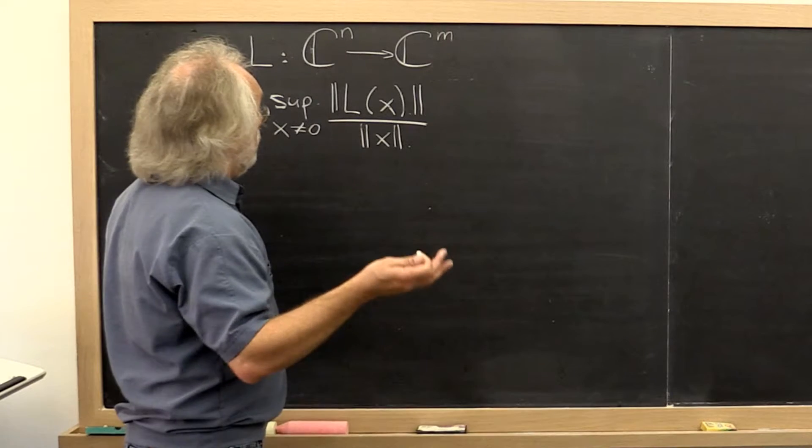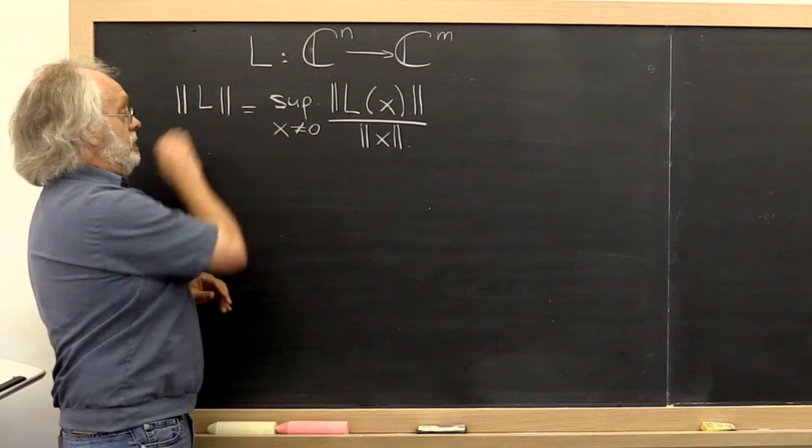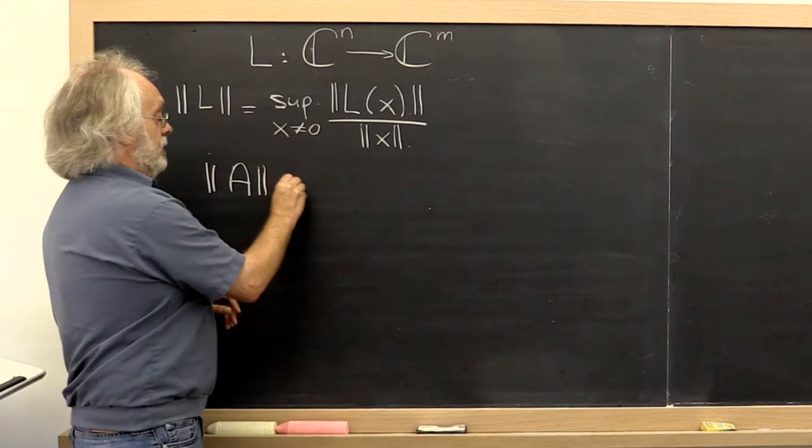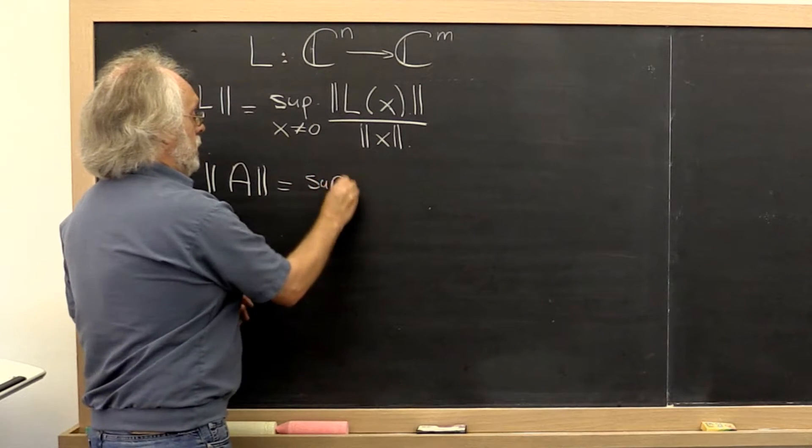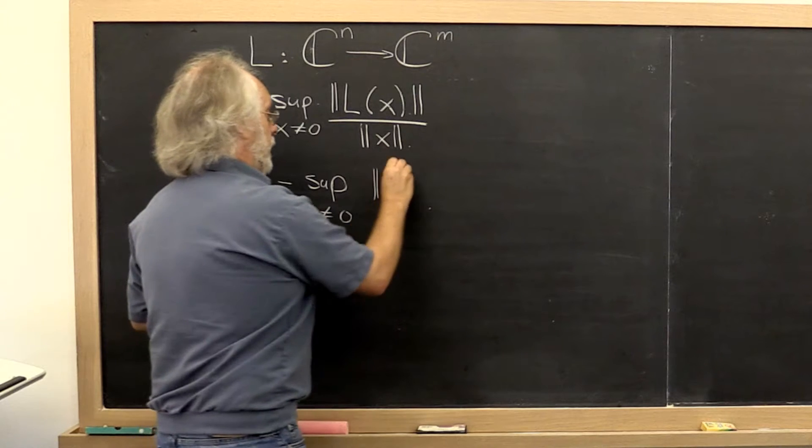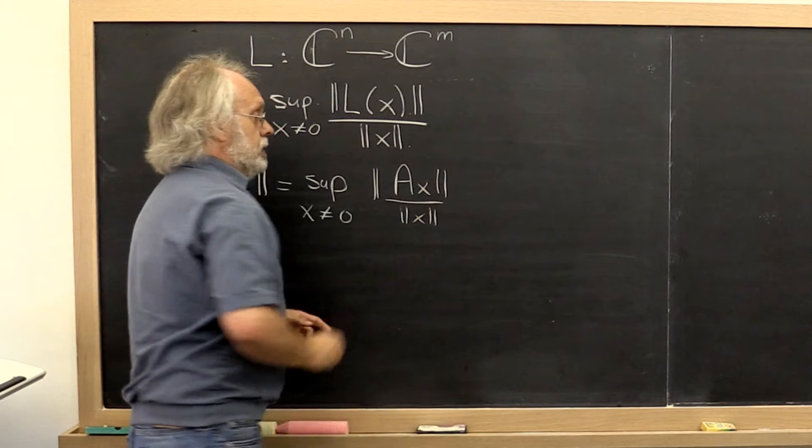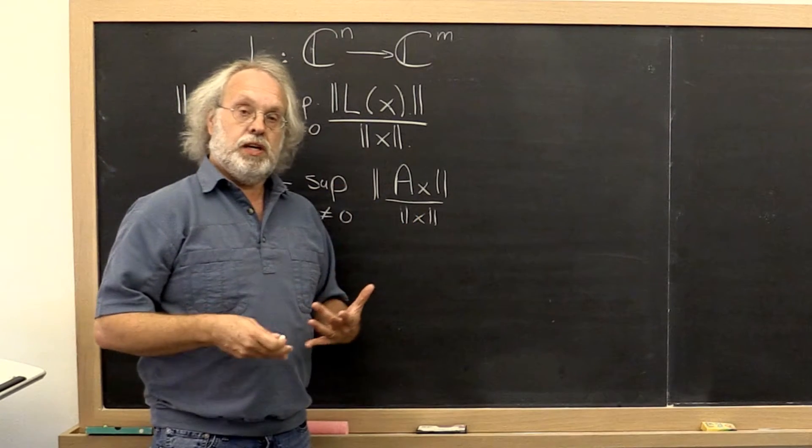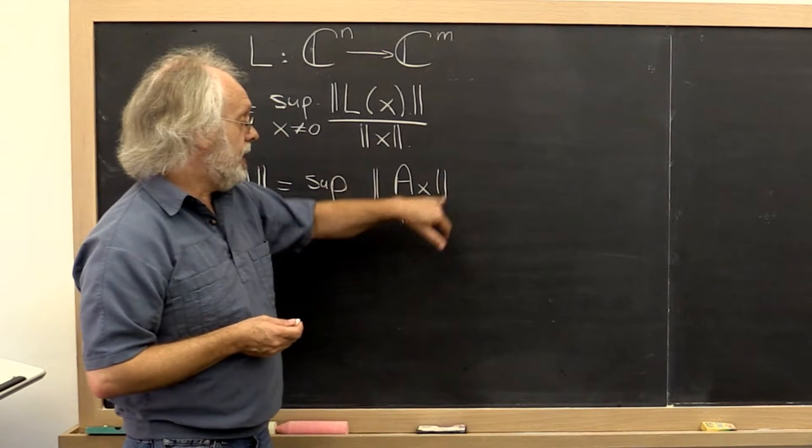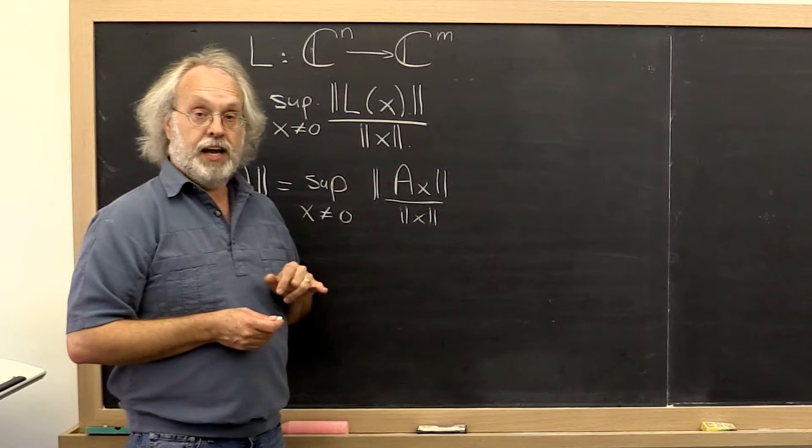What else? Well, if we then have a matrix A that represents the linear transformation, then we could define the norm of A to be the supremum over all x not equal to 0 of A times x over x. And norms like that are known as induced matrix norms because they are induced by the vector norms that you pick for the input and for the output.